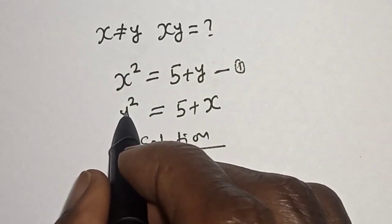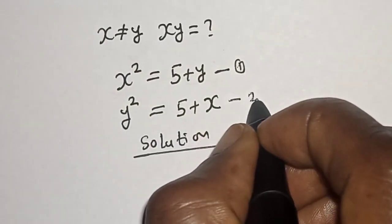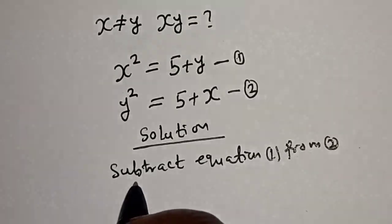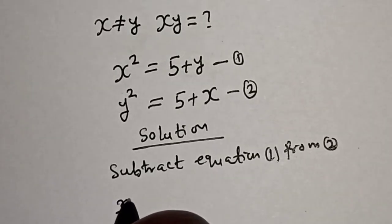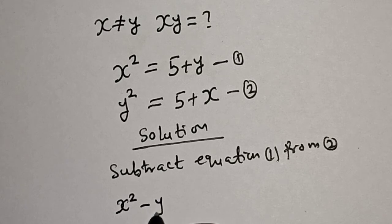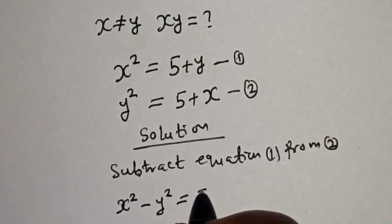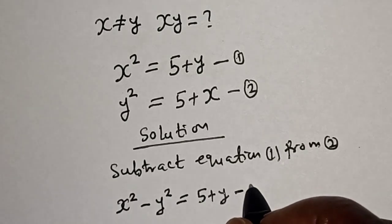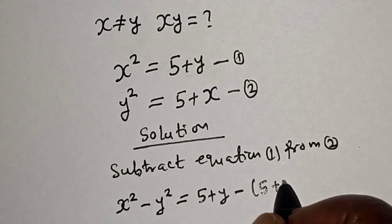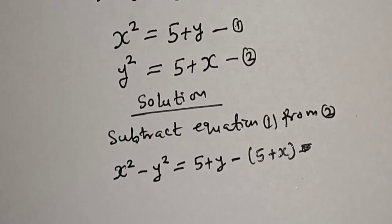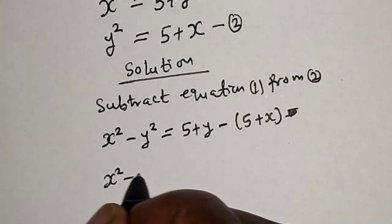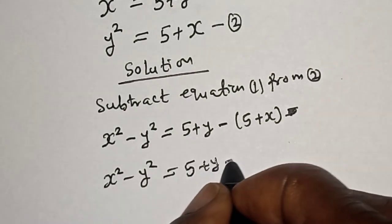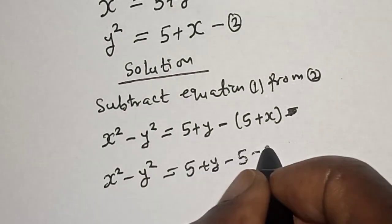Then here is y square is equal to 5 plus x. Let's call this equation 2. The next thing is to subtract equation 1 from 2. Then we have x square minus y square is equal to 5 plus y minus 5 plus x. This becomes x square minus y square is equal to 5 plus y minus 5 minus x.